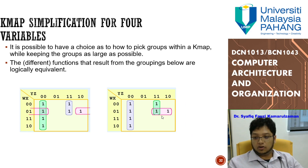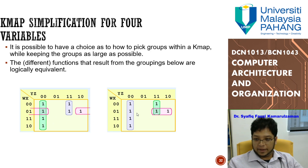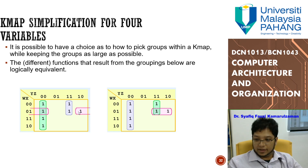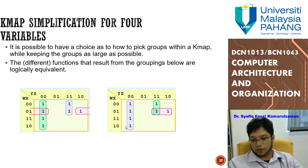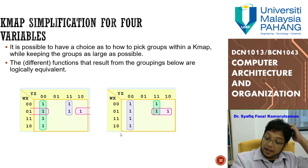Sometimes you have multiple valid grouping options for the same K-map. You can group cells one way, or a different way with overlapping groups. Both approaches are acceptable — they may produce different but equivalent simplified expressions. Overlapping groups are allowed, and either valid simplification is correct.